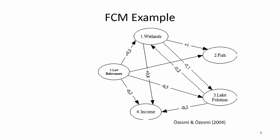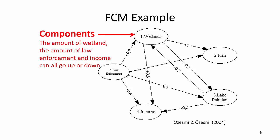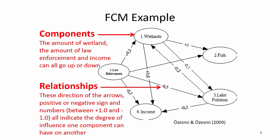Here's an example of an FCM from Ozesmi and Ozesmi 2004 in Ecological Modeling. It shows what an FCM looks like. You've got these components — because it's parameterized in an FCM, wetlands can go up or down, and all of these various ovals can go up or down. The relationships between components are parameterized between positive 1 and negative 1: if it's positive 1, it has a high positive influence; if it's negative 1, it has a high negative influence; and if it's 0, it doesn't have an influence.